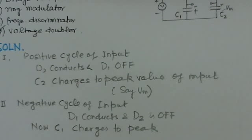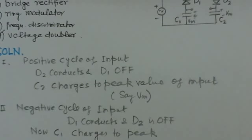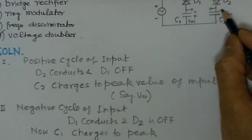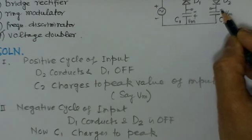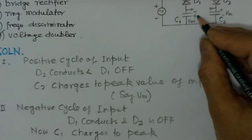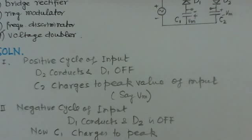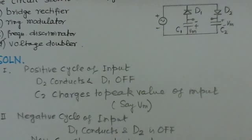Now the negative cycle of input is applied. For the negative cycle, D1 will conduct and D2 will be off. Now C1 will be charging. The capacitor C1 will charge with the polarity indicated here—this would be negative and this would be positive. With this polarity, it charges to a peak of Vm.